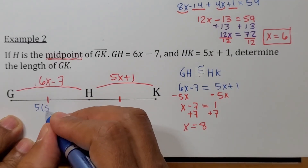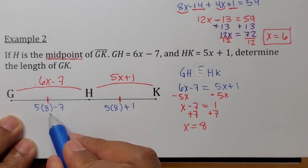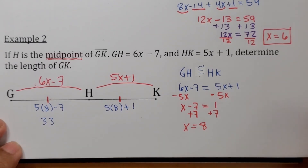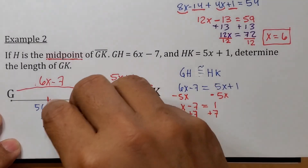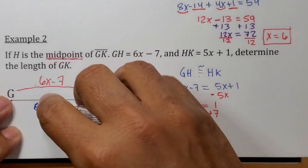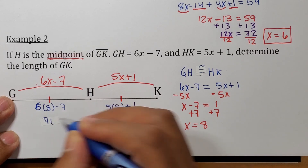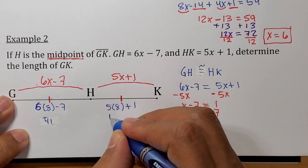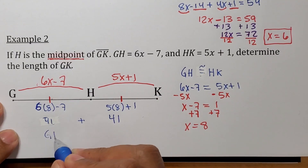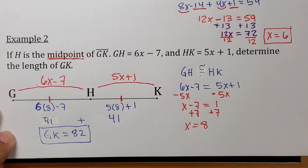Now finding the length of GK. For GH: 6 times 8 minus 7 equals 48 minus 7, which equals 41. For HK: 5 times 8 plus 1 equals 40 plus 1, which equals 41. Both are equal, confirming H is the midpoint. To get the whole segment GK, add 41 plus 41, so GK equals 82 units. I apologize for any confusion along the way.